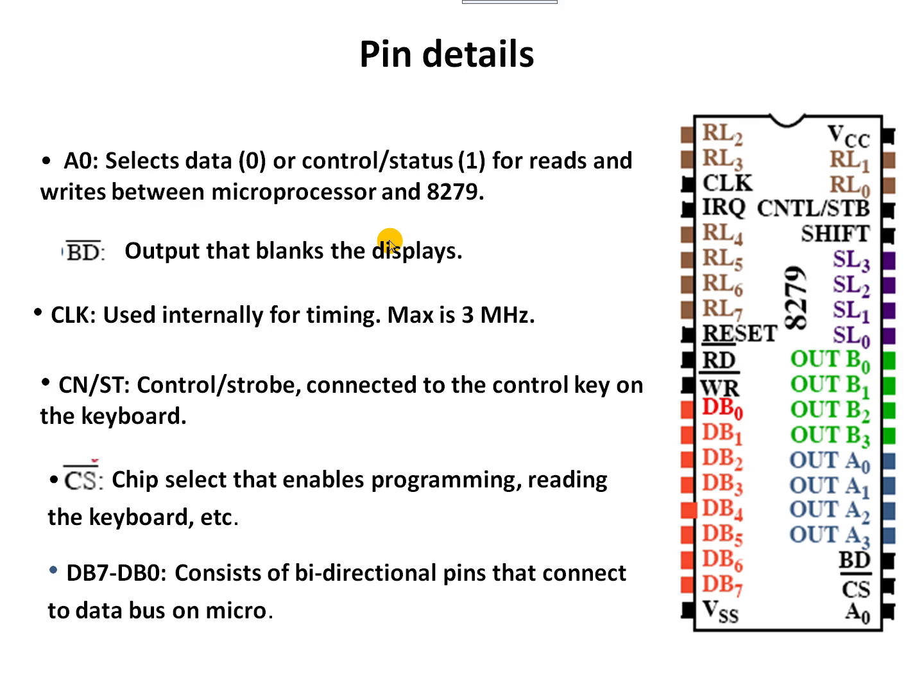The 8279 helps the microprocessor by handling the processing of information required for display and keyboard hardware. The processing can be done by the 8279 so that the microprocessor does not need to be loaded with these operations. This is the main advantage of using the 8279 as a separate controller for keyboard and display operations.